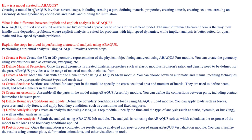The first question is: in Abacus, how exactly are we going to create the model? The steps include creating the part, defining the material, creating the mesh, defining the section, then creating the assembly. Finally, we define the boundary conditions and loads, define the analysis step, submit the analysis, and post-process using Abacus Viewer.